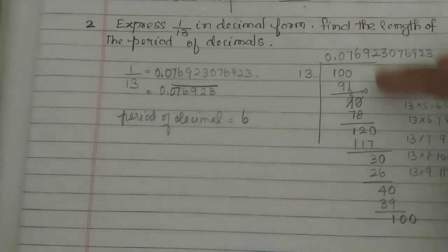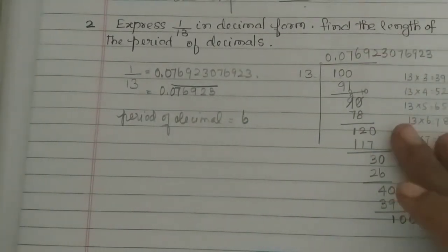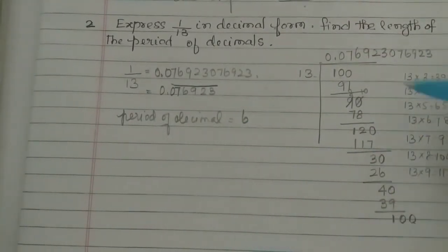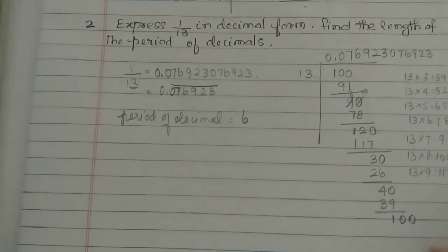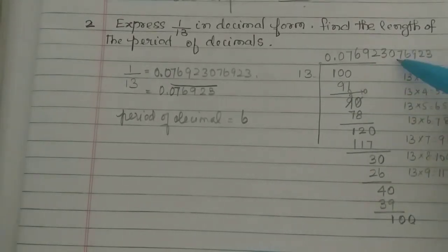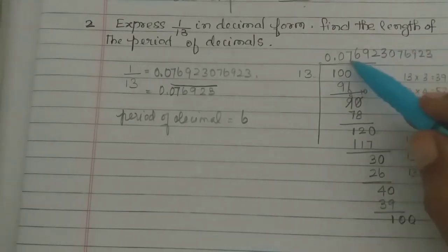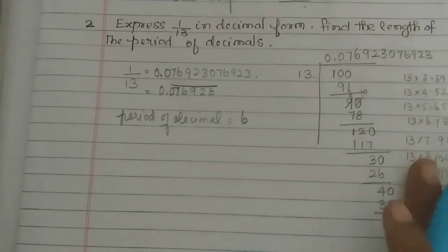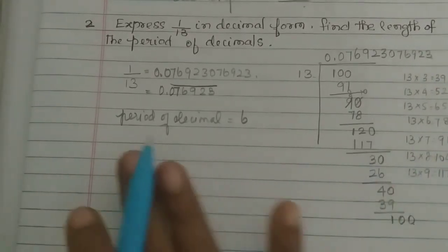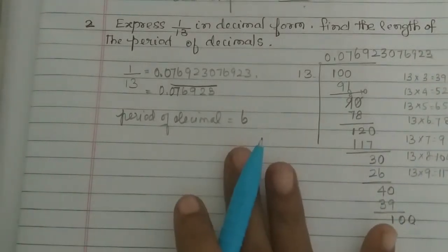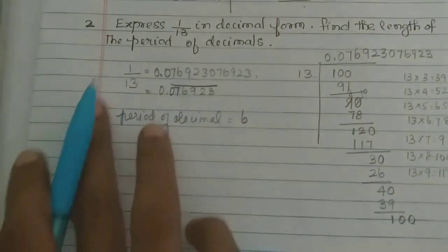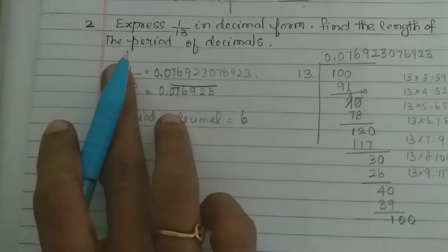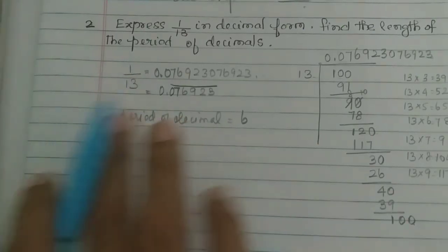The number of decimal digits in the period is 6. So the period of decimal is equal to 8. Therefore the period of decimal is equal to 8.